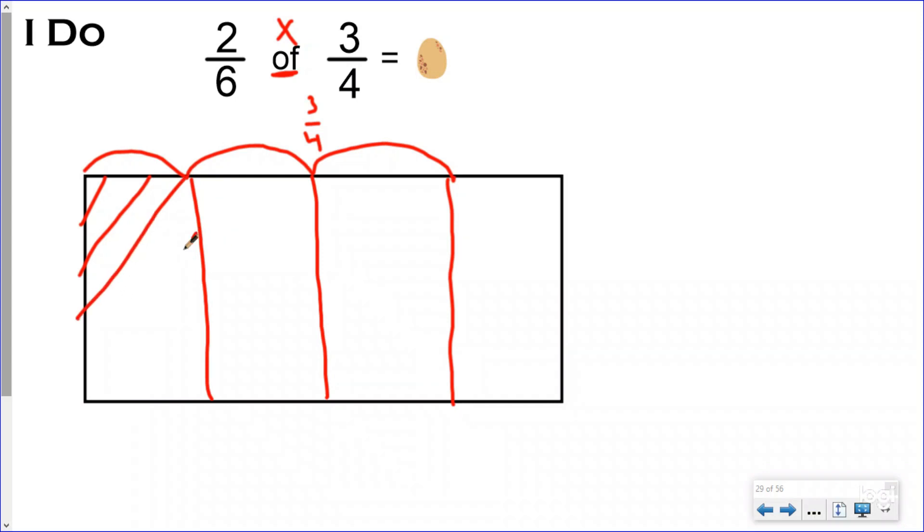Now, if you notice, I'm shading it in using these diagonal lines. So I am cross-shading in my three-fourths, not just coloring it in, and you will see why in just one minute. So now I am starting with three-fourths, and I want to know what was two-sixths of that. I had a cake, I took out three-fourths of the cake and gave it to my son, and he only ate two-sixths of it. How much did he eat? That might be the word problem that goes with this.